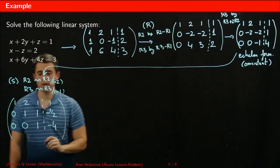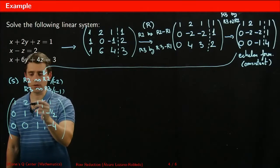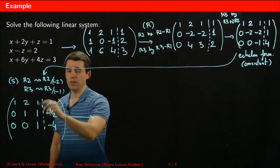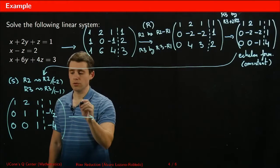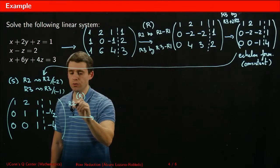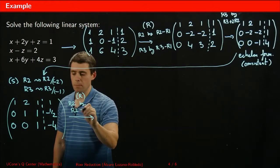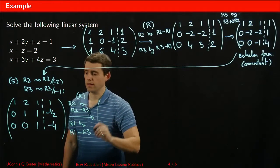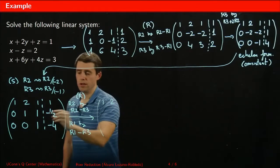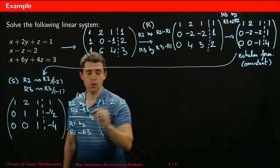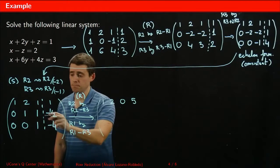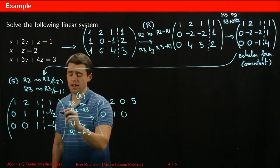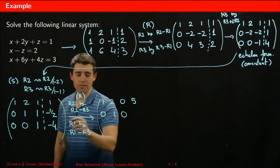In reduced echelon form, above pivots there should be zeros. So I'm going to remove the entries above the last pivot. I replace r2 by r2 minus r3, and replace r1 by r1 minus r3. That gives: row 1 becomes 1, 2, 0, 5 (since 1 minus negative 4 is 5); row 2 becomes 0, 1, 0, and minus one-half plus four is seven-halves; and the last row is untouched.